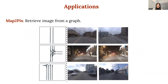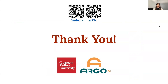Lastly, about Map2Px: the goal of Map2Px is to retrieve aerial-camera images given a street map. Such image retrieval could be useful for simulator-based training and validation of autonomous stacks. A single street geometry can retrieve multiple consistent realistic images. Thank you — please scan our website or paper for more information.